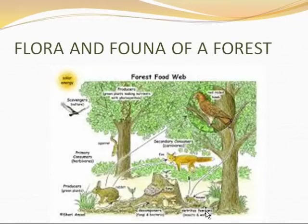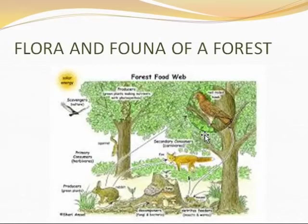In the uppermost layer, tall trees like sal, arjun, and teak are present, and animals like eagles, snakes, and monkeys are present. In the understory layer, you will get different kinds of plants like mango, neem, peepal, and papaya, and animals like monkeys, frogs, snakes, and squirrels.